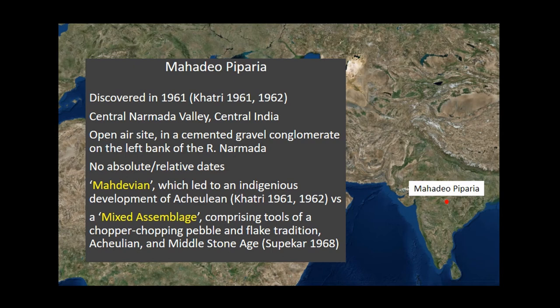In 1963 and 1965, another doctoral candidate, Supekar, conducted excavations at this site and said it's a mixed assemblage comprising three different traditions — although coming from the same stratification. The criteria he used was typological: all pebble cores and flakes belong to a chopper-chopping tradition, all bifaces belong to an Acheulean tradition, and those on siliceous material were a Middle Stone Age element. This kind of classification is problematic.